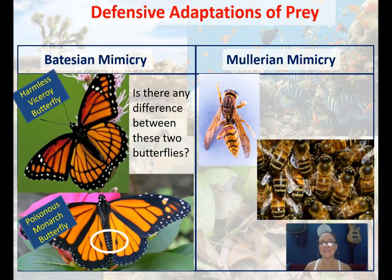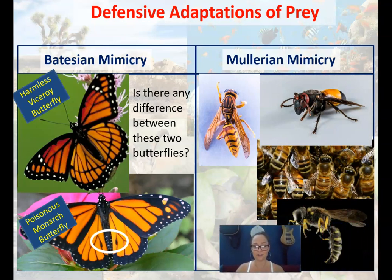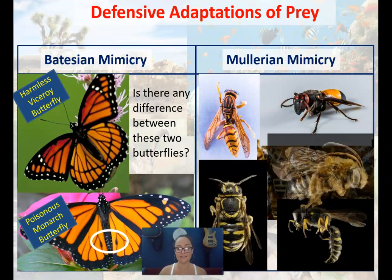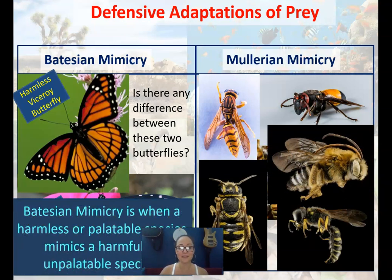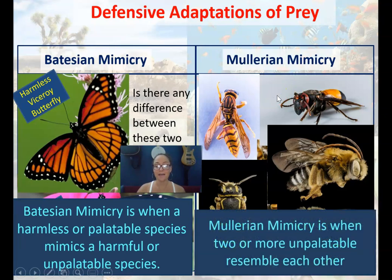Then there is Mullerian mimicry — think of it as safety in numbers. The black and yellow phenotype: if you see an insect that is black and yellow, your instinct is that it's going to sting you. In Mullerian mimicry, this black and yellow phenotype has been selected for in multiple different species as a warning coloration. You see it in all kinds of different insects, selected for by natural selection, and it functions as a group defense. Batesian mimicry is when a harmless or palatable species mimics a harmful or bad-tasting species. Mullerian mimicry is when two or more unpalatable or dangerous organisms resemble each other.